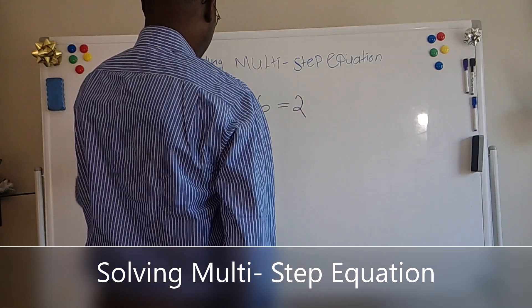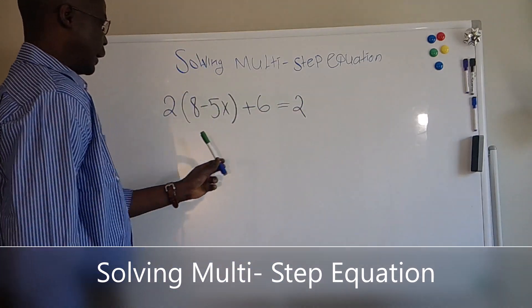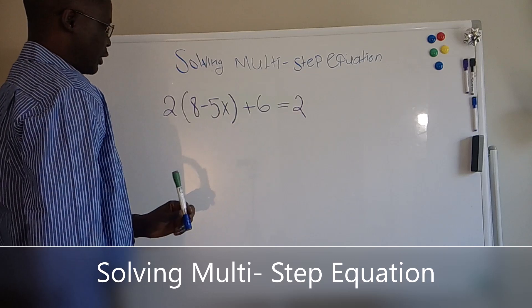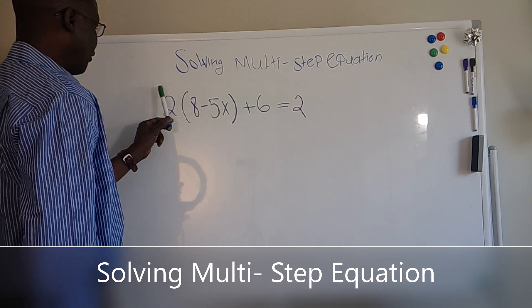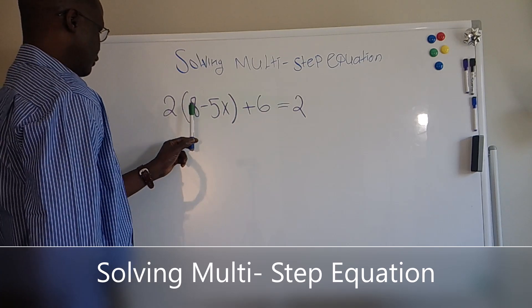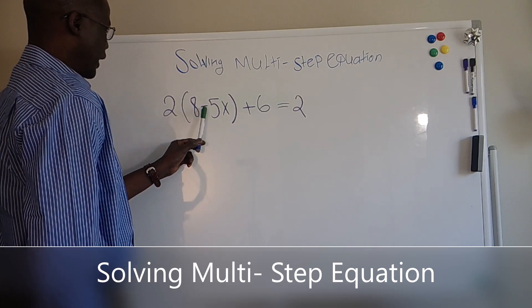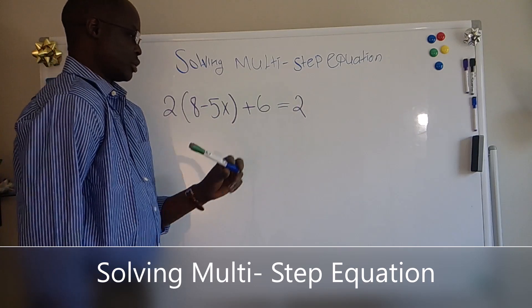I want you to take one second and look at the equation and see how you can solve it. What we have here is 2 times the whole parenthesis, 8 minus 5X plus 6 equals 2.